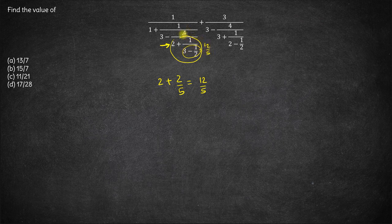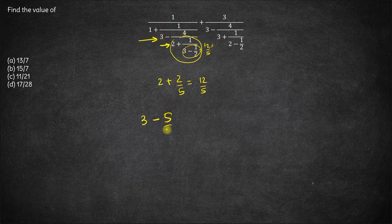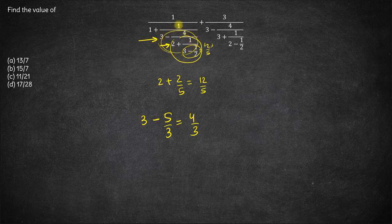So 4 upon 12/5 — 12 goes by 4 three times — this becomes 1 upon 3/5, which is 5/3. Now we are solving this part: 3 minus 5/3. So 3 into 3 is 9, and 9 minus 5 is 4/3. So this whole term comes out to be 4/3.